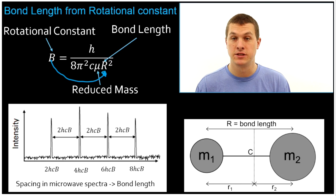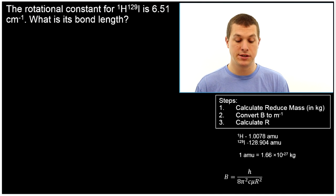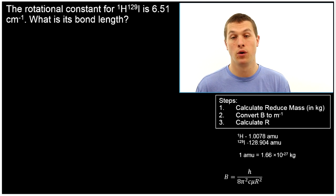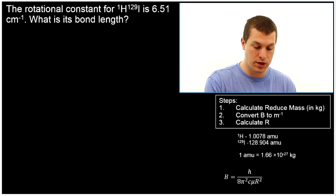Let's take a look at a specific example problem. So this problem tells us that the rotational constant for H¹I¹²⁹ is 6.51 wave numbers. And it wants to know what is the bond length. Well, we can calculate this in a few steps. And I've broken them down down here.